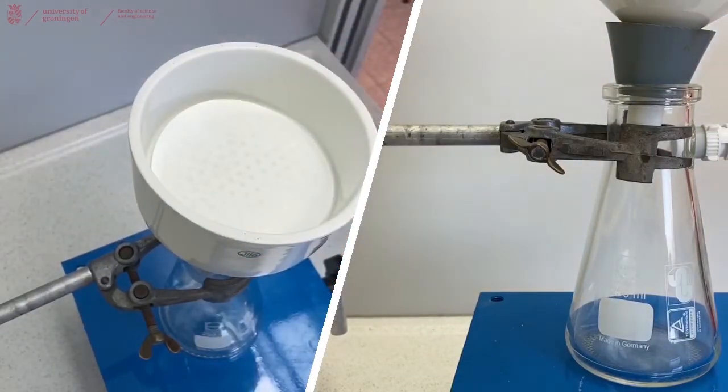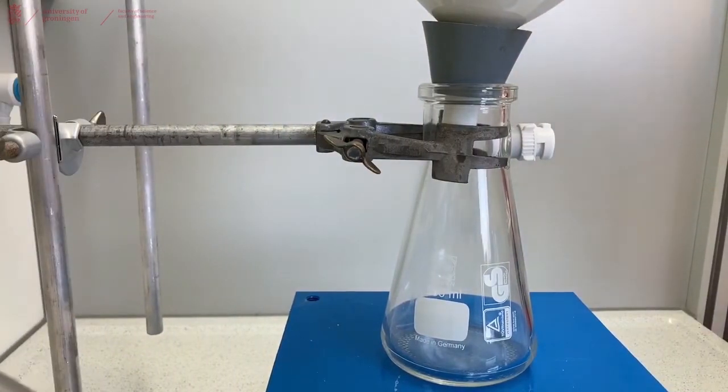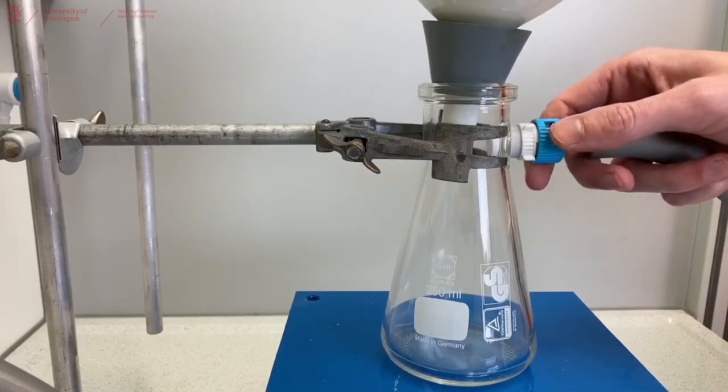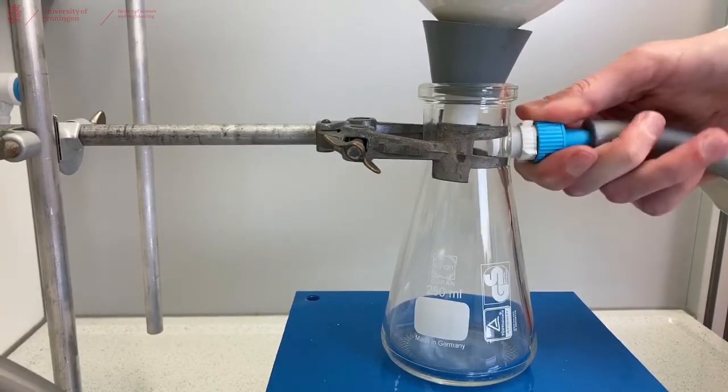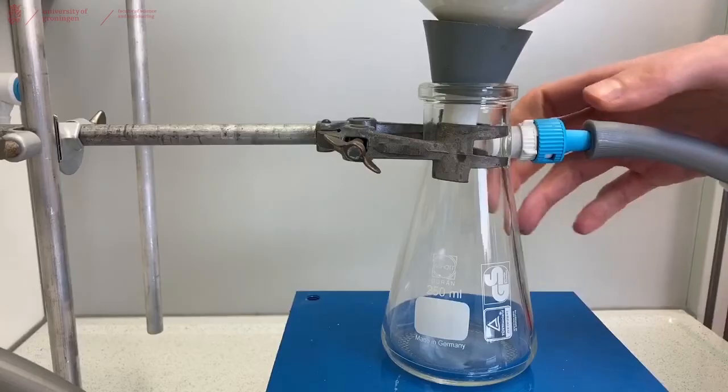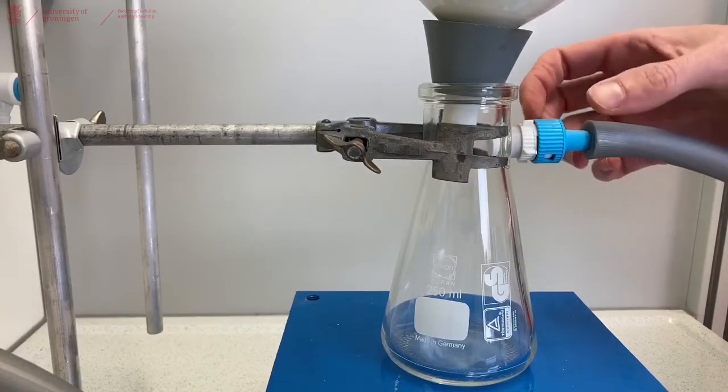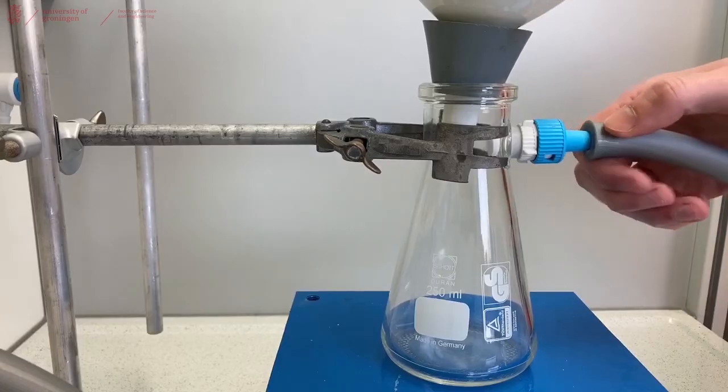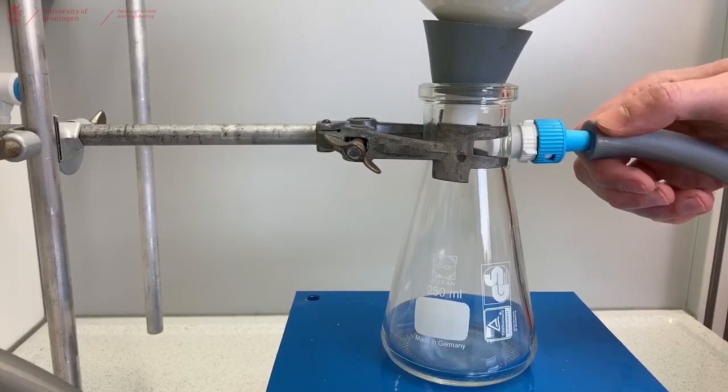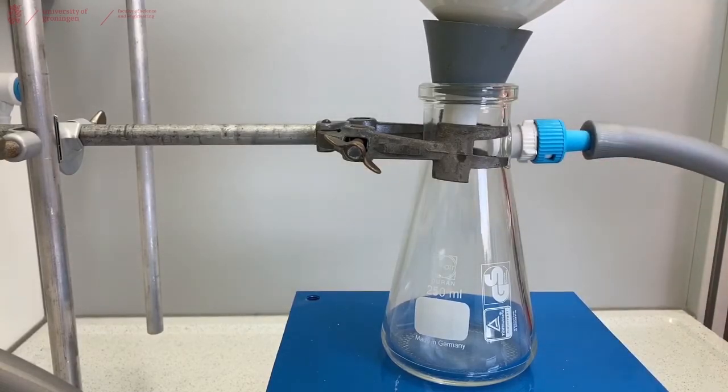Connect the filtration flask to the vacuum. In this case we're using the inline system of this fume hood, but you could also use a vacuum pump that is available in most labs. Make sure it's attached tightly - this one has a screw cap. You can also have ones with an opening where you just push the gray hose inside the filtration flask.